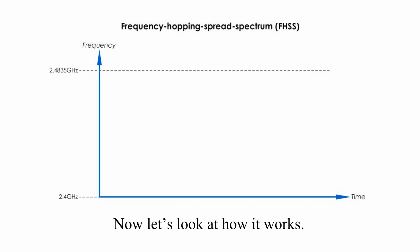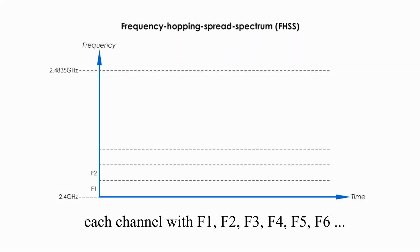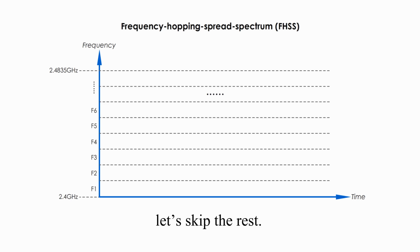Now, let's look at how it works. First, let's divide the 2.4 GHz frequency band into 79 narrow frequency channels, and each channel is 1 MHz wide. Starting from the bottom, we label each channel with F1, F2, F3, F4, F5, F6, and so on. Let's skip the rest. We will use these 6 narrow channels to demonstrate how FHSS works.